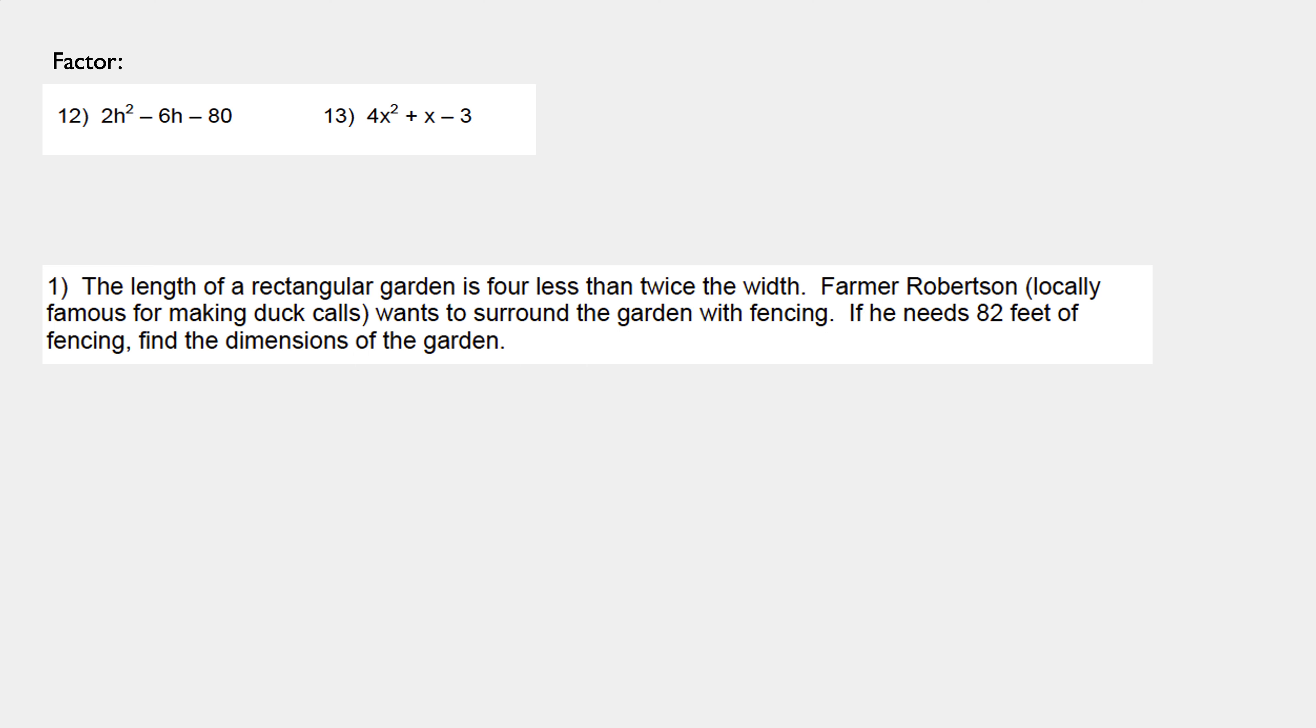I take a look at these first two questions about factoring, and I notice right away that the lead coefficient is not one. I could do that if it was just one H squared and one X squared, but it's not. So, plan A is always to look for a greatest common factor. And in number 12, I find that greatest common factor. It is two. So, first things first, let's factor out the two. And then I look and see, can I factor this remaining trinomial, this H squared minus 3H minus 40? The answer to that is absolutely.